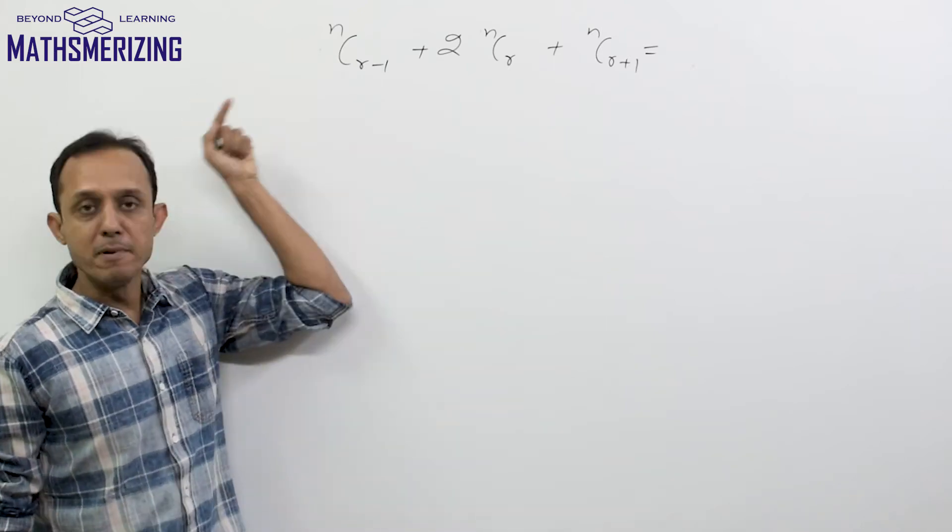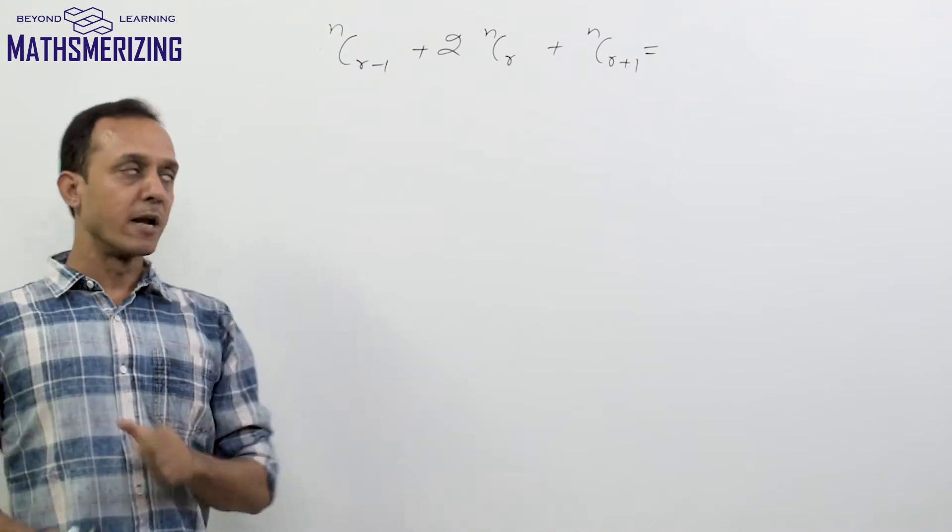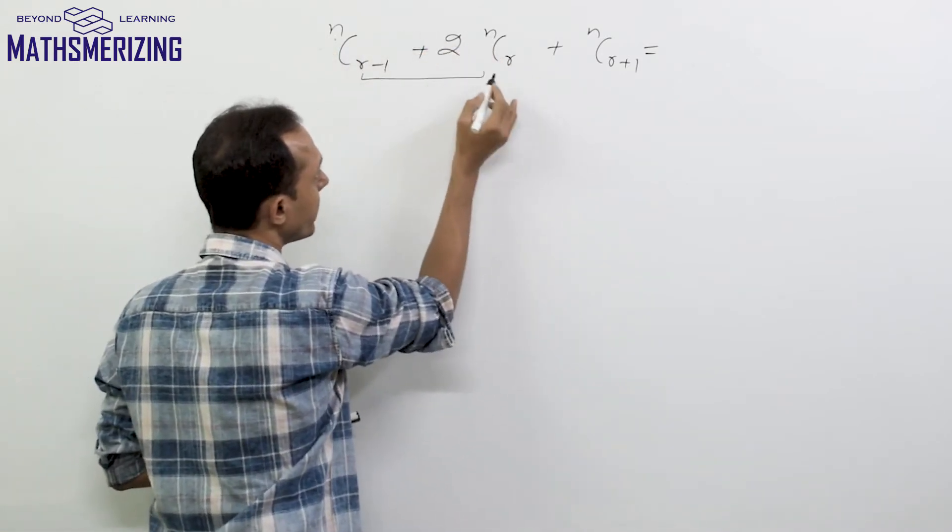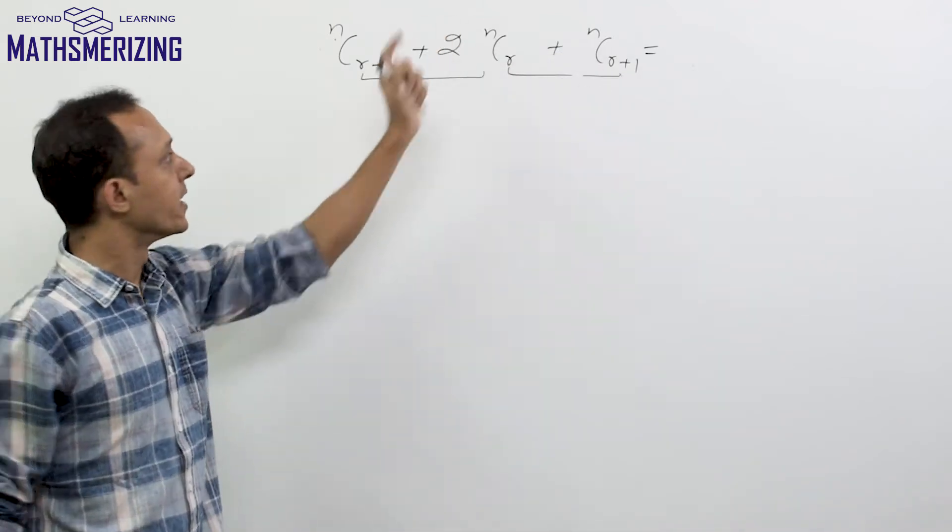Suppose the question is we have to simplify nCr-1 + 2·nCr + nCr+1. What I see is n is the same, r differs by 1, and again n is the same and r differs by 1, and we have 2 into nCr.